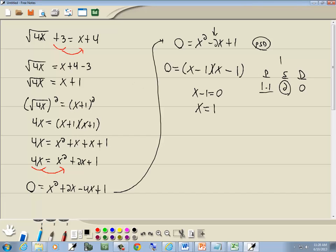Remember, we have to check our answer. If I put 1 here, 4 times 1 is 4, square root of 4 is 2. So we've got 2 plus 3, that gives us 5 on this side. If I put 1 in for the x here, 1 plus 4 is 5, so you get 5 equals 5. So this one checks. And that's our answer.